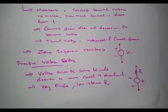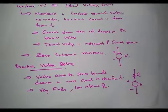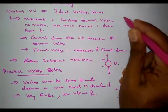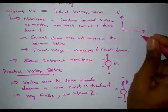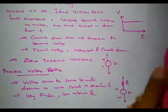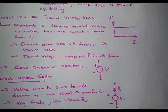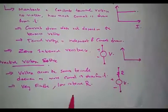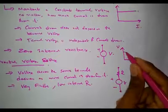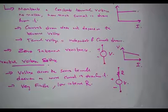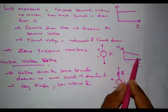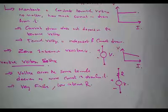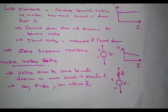Let us look at the VI characteristics of the constant voltage source and practical source. For a constant voltage source, the voltage is independent of the current drawn. If we put terminal voltage V on the Y-axis and current on the X-axis, the voltage remains constant no matter how much current is drawn, so the VI characteristics is a straight line. For a practical voltage source, it has a small finite internal resistance R, so the voltage will decrease as the current drawn increases. V is the terminal voltage and I is the current drawn by the load.